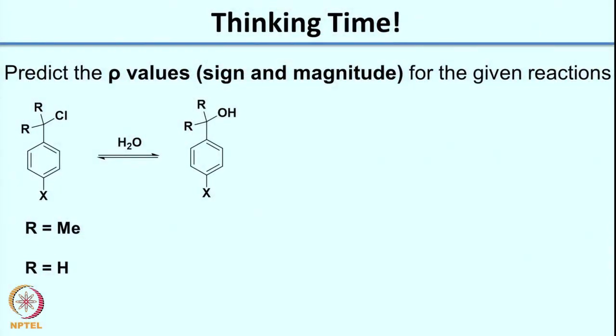Now consider two related reactions: in one case both R groups are methyl, and in the other both R groups are hydrogen — both substitution reactions. Think about whether you can predict the magnitude and sign of rho for each. As before, first write the possible mechanisms and based on the intermediate think about whether electron-withdrawing or electron-releasing groups will stabilize it.